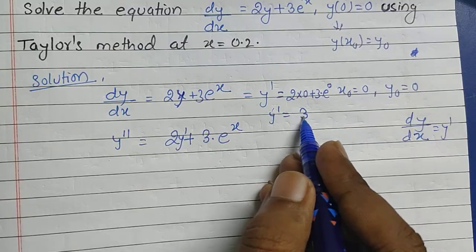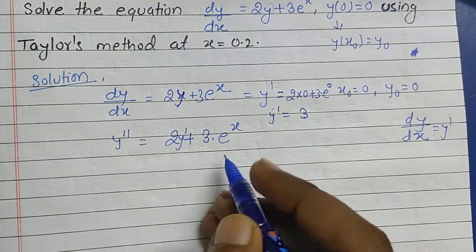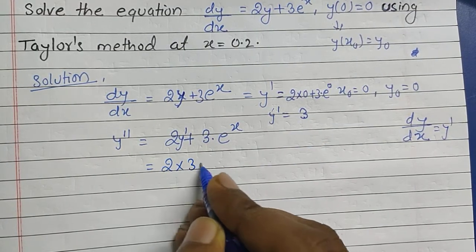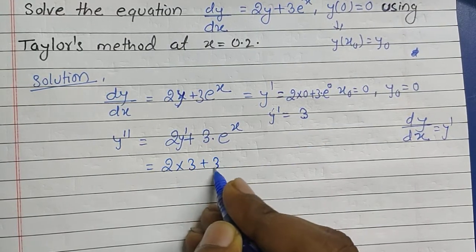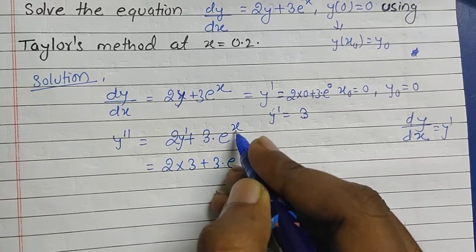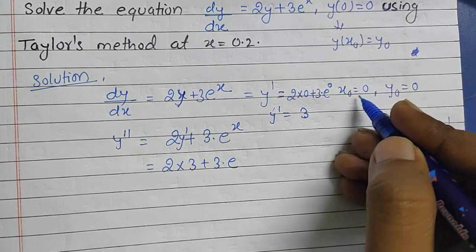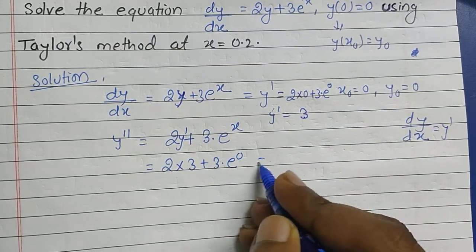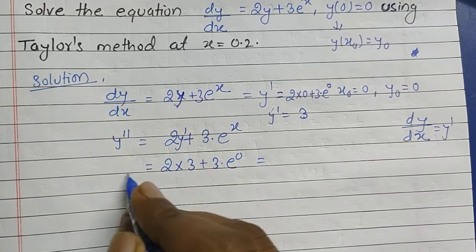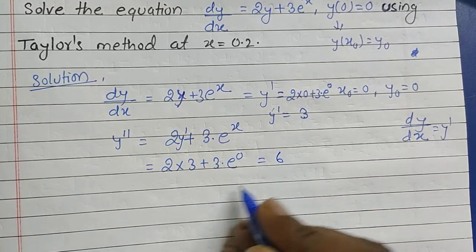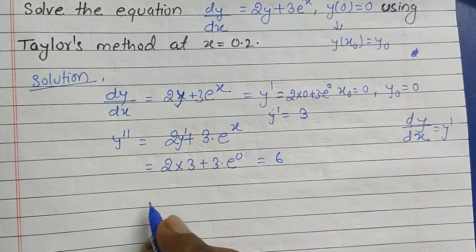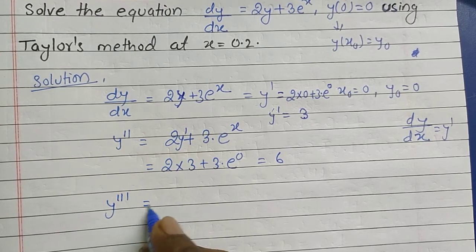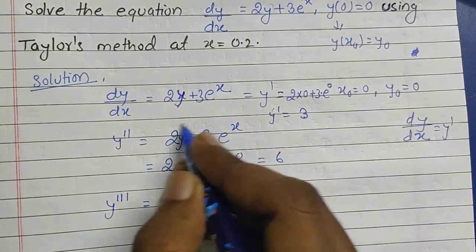We have the value of y' = 3, so y'' = 2(3) + 3e^(x₀), and x₀ = 0, so y'' = 6. Now for the third order derivative y''', we have to find the derivative of the previous expression, which gives 2 times y'' plus 3e^x.